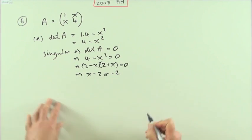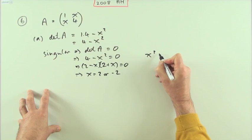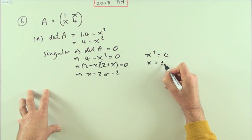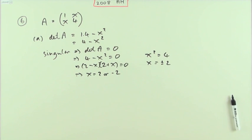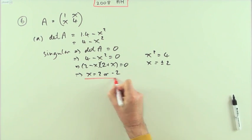Or you could simply rearrange it: x squared is four, so x is the square root, which is plus or minus two. Whichever way you like, the answer is x is either two or negative two, maybe the other way around to put the negative first.